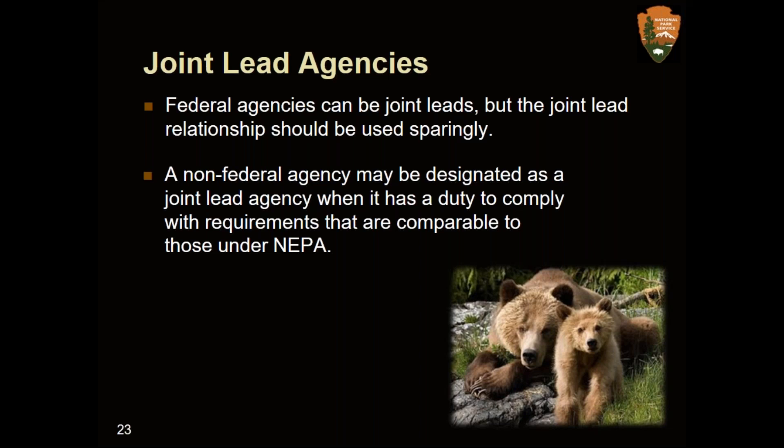We'll now take questions. The first question is: is it mandatory that all cooperating agencies' names appear on the EIS document? And do all agencies write their own records of decision?